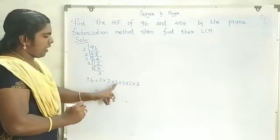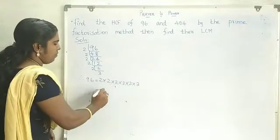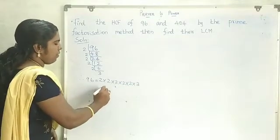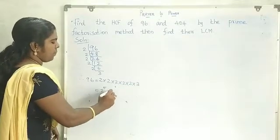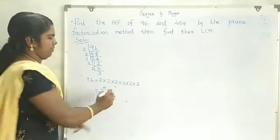Counting the five 2s: 1, 2, 3, 4, 5. Therefore, 96 = 2 to the power 5 into 3.